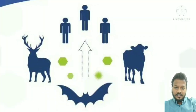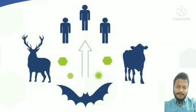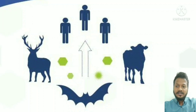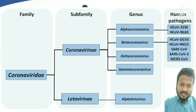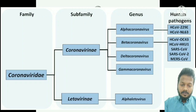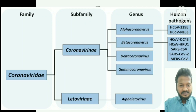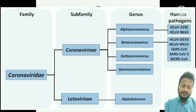COVID infection is a zoonotic disease — humans get infection from animals. Before going to COVID infection, let us have a look at the classification of coronavirus. Coronavirus comes under order Nidovirales, family Coronaviridae, subfamily Coronavirinae, and genus is divided into four different types: alpha, beta, gamma, and delta.